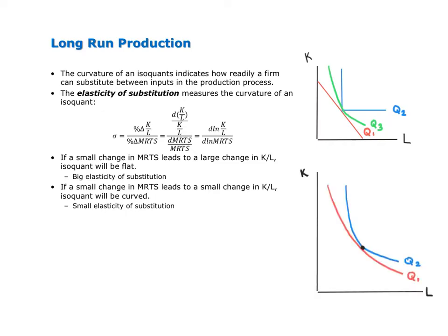To understand what this formula means, consider these two isoquants. Isoquant Q1 is relatively flat compared to isoquant Q2, which is relatively curvy. For both, let's think about moving along the isoquant, starting at this point here where the isoquants are tangent to each other, in order to force a 1% change in the MRTS. Because isoquant Q1 is flatter, to get a 1% change in slope, we're going to have to move further along this isoquant than we have to move along isoquant Q2, since it's curvier.